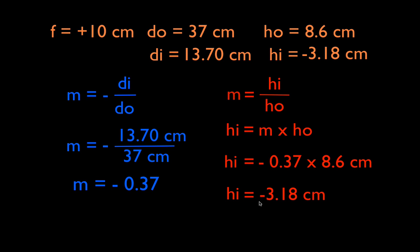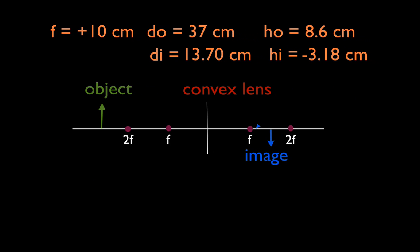We have minus 3.18 centimeters and if we think about all of that and we go on now and we look at our diagram we had previously, here's our answers. 13.7 is the image distance. Negative 3.18 is the image height. Here where the object is, we said the image better be between f and 2f, and once again we can see it is between f and 2f, 10 and 20. 13.7 is between f and 2f. The image is smaller. It's 3.18 centimeters tall. This was 8.6 so that's smaller obviously, and this negative sign tells us that the image is inverted.